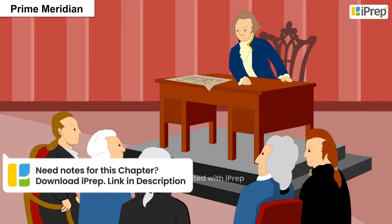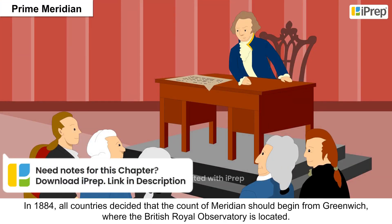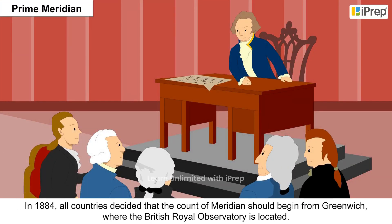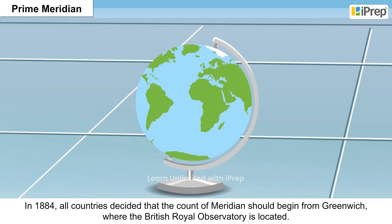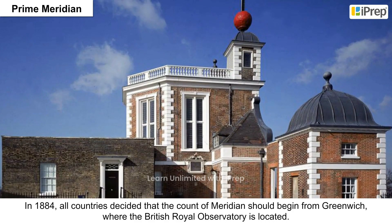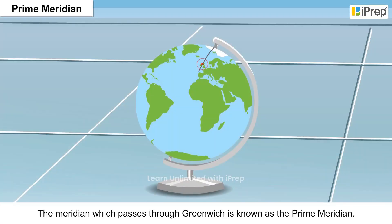Prime Meridian: In 1884, all countries decided that the count of meridians should begin from Greenwich, where the British Royal Observatory is located. The meridian which passes through Greenwich is known as the Prime Meridian.